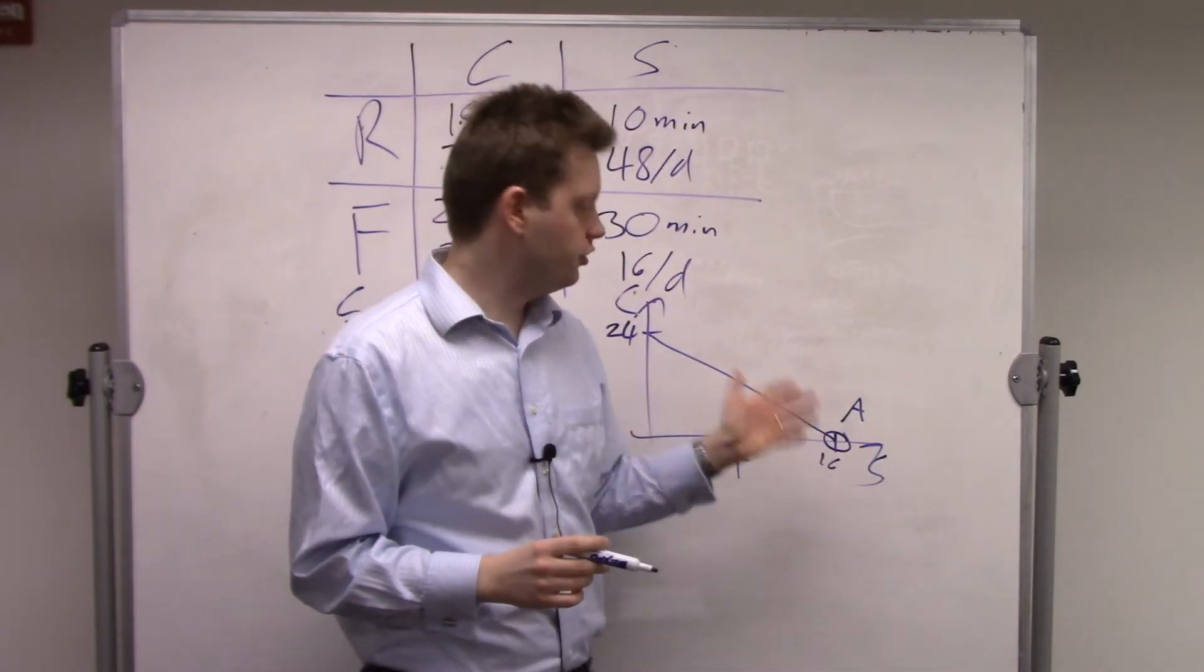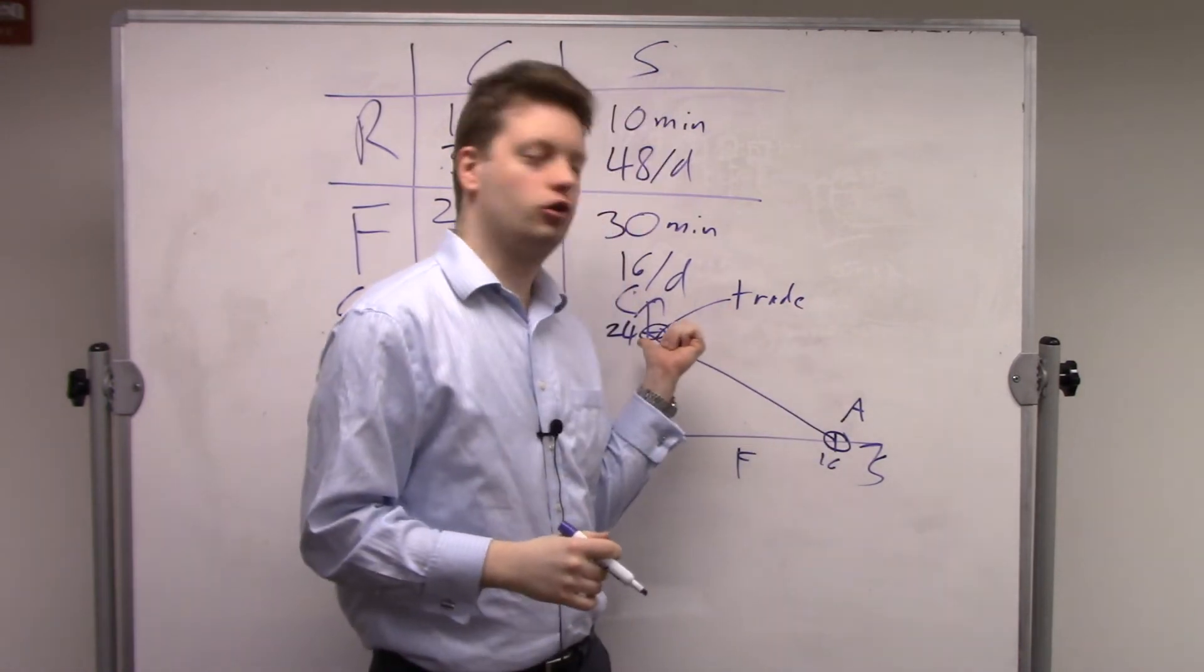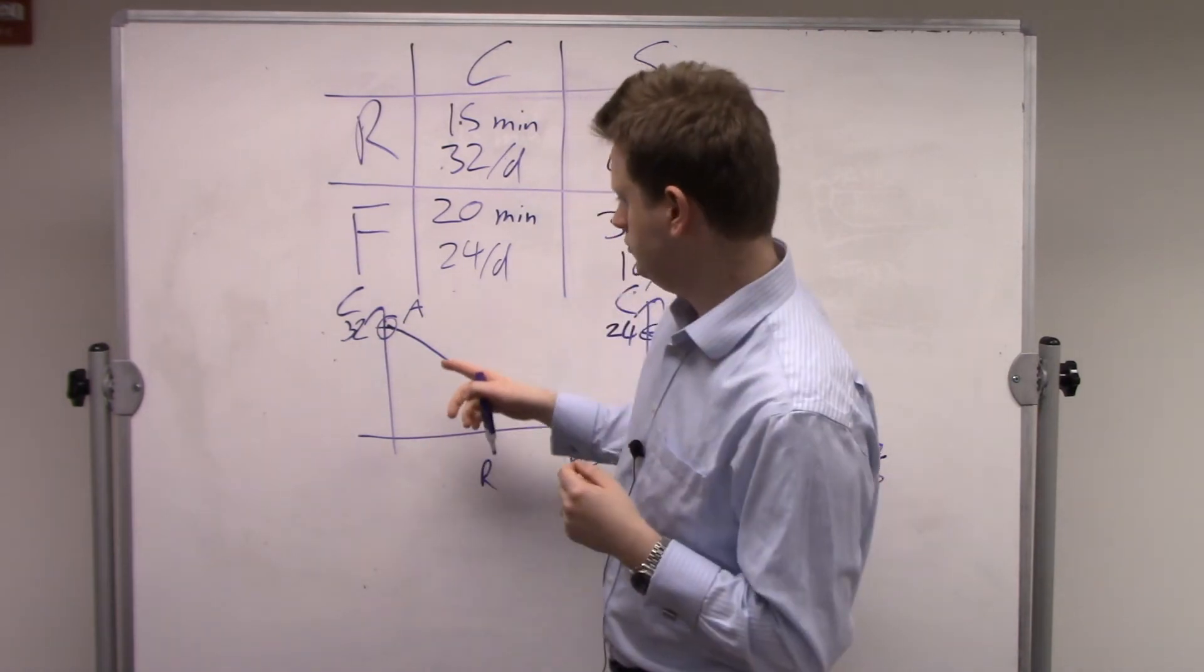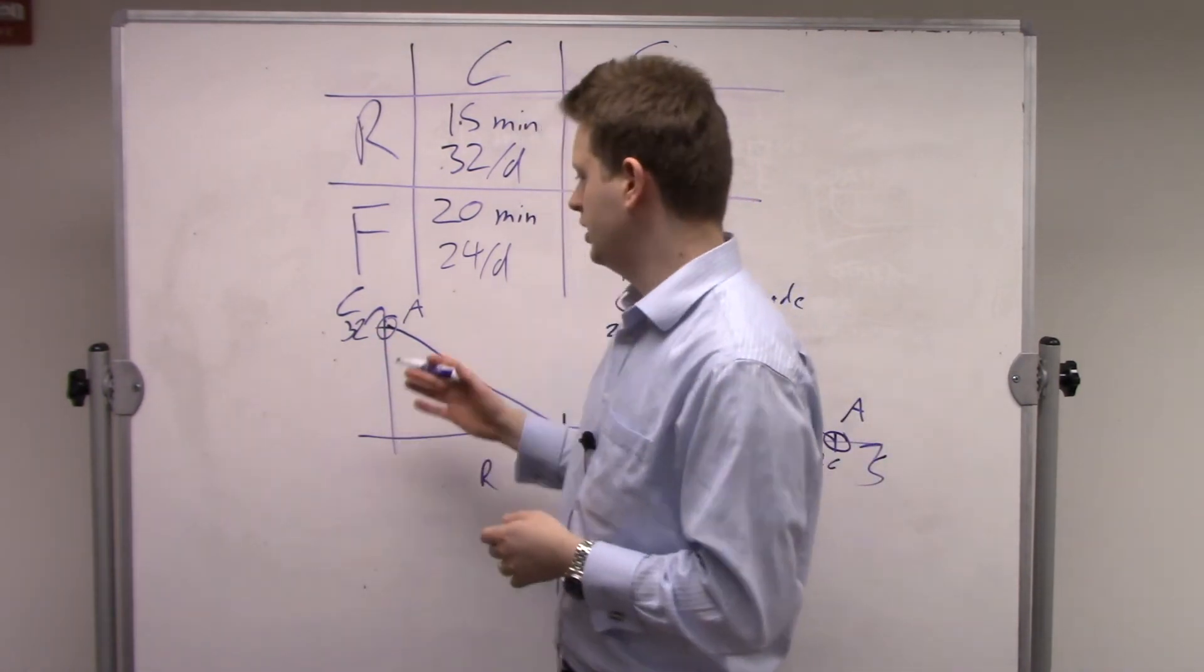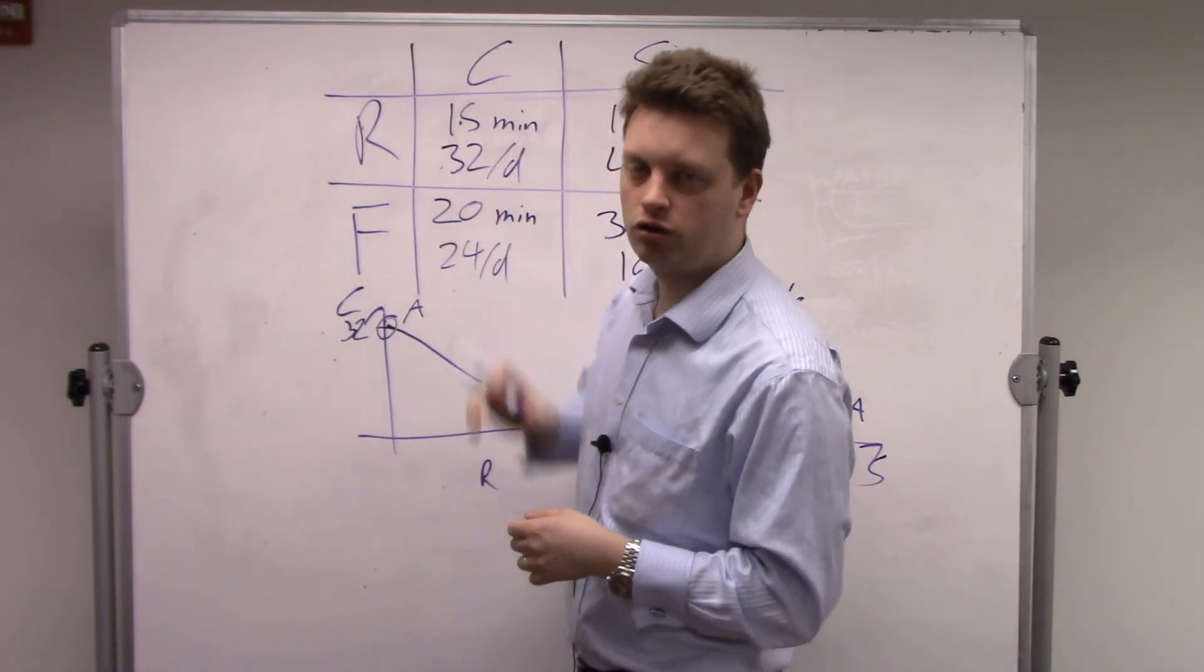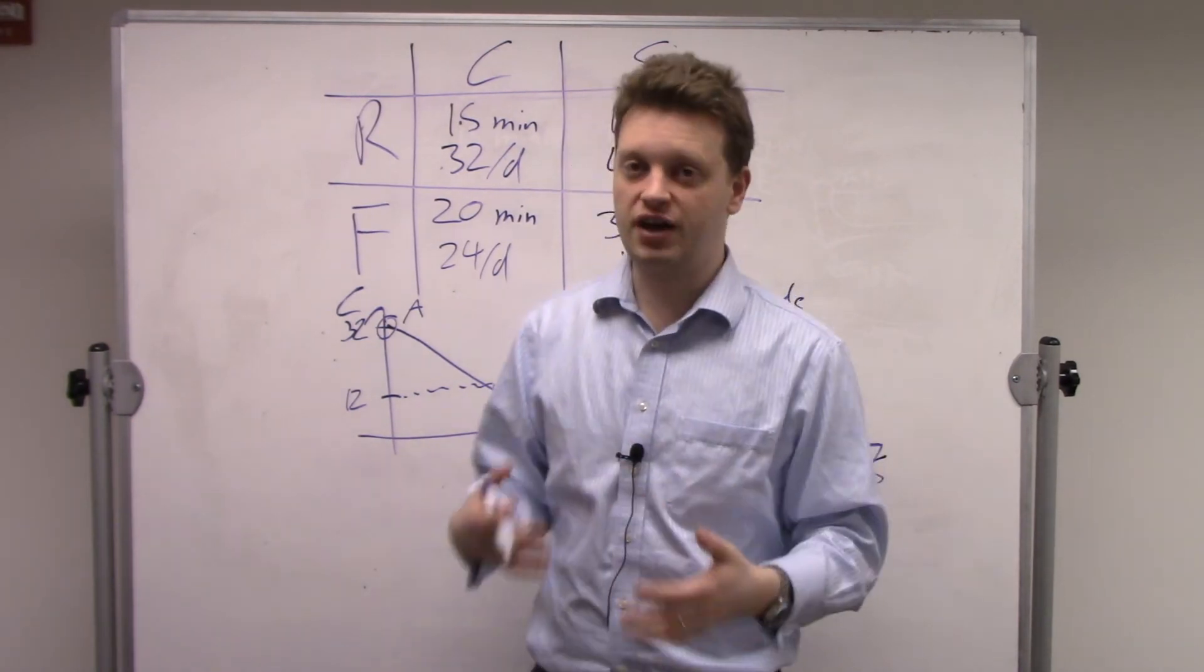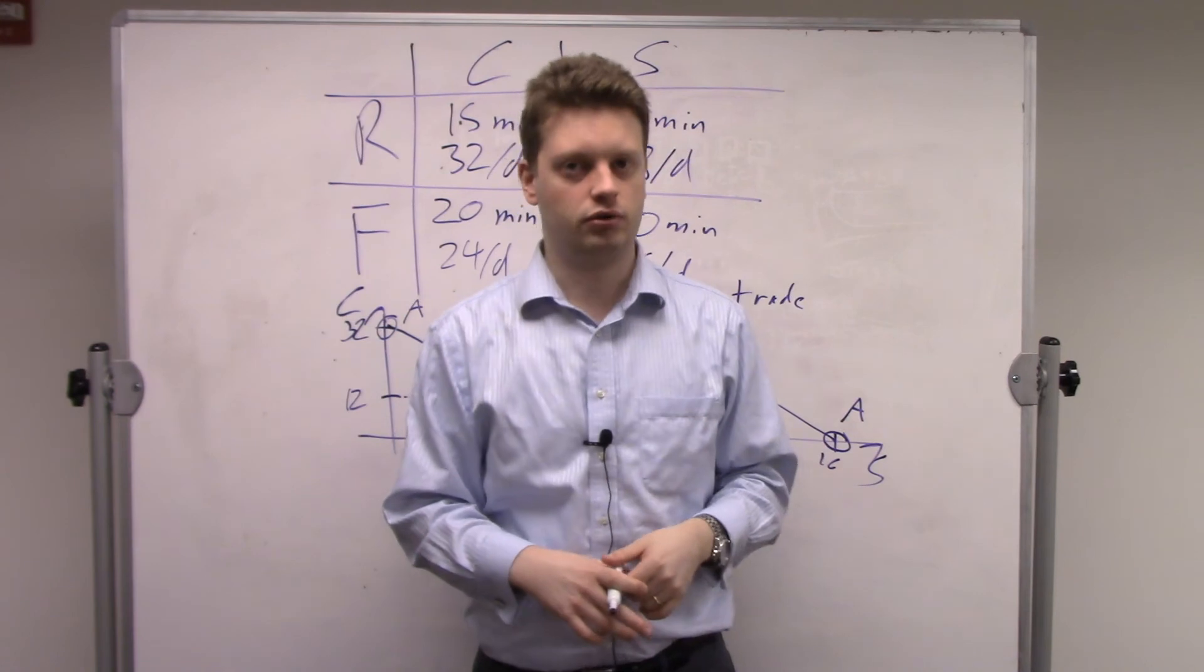Because Robinson Crusoe actually produces way more than Friday, Robinson Crusoe cannot specialize completely. He needs to produce still some coconuts, otherwise he will be worse off. Friday, on the other hand, produces less overall, so he can completely specialize. So with trade, he'll produce 24 coconuts and gives all of them to Robinson Crusoe. Now let's assume Robinson Crusoe spends three hours gathering coconuts to ensure he gets more than 32, and spends the rest of the time catching fish. If he spends three hours gathering coconuts, he will gather four coconuts per hour, three times four, 12 coconuts. That leaves him with five hours, and in these five hours he will catch fish, six fish per hour, so 30 fish in total.